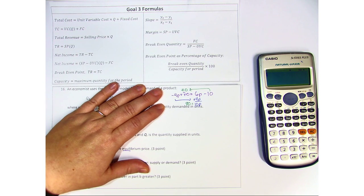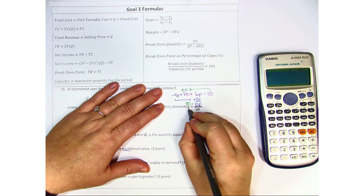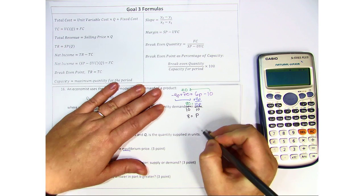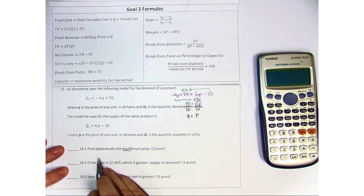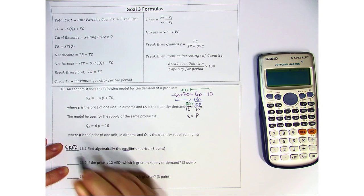So we have 80 equals 10p. In order to solve it, we divide both sides by 10, and we get the price of 8. So find algebraically the equilibrium price: 8 dirhams.